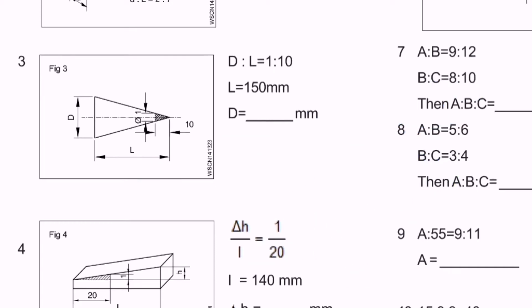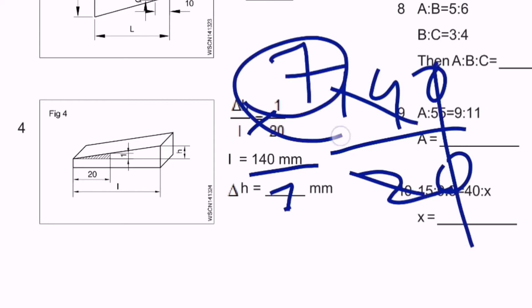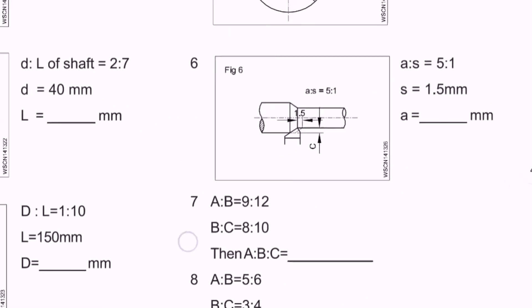Question number four: there is a job where Δh/L equals 1/20. Length is 140. So 140 times 1 divided by 20 equals 7. The answer is 7mm.